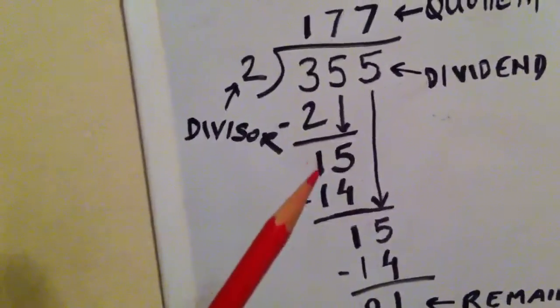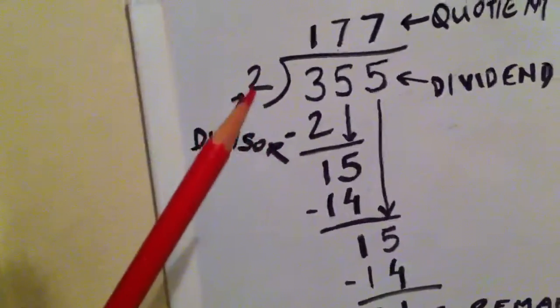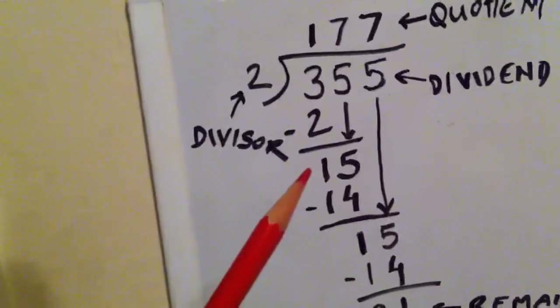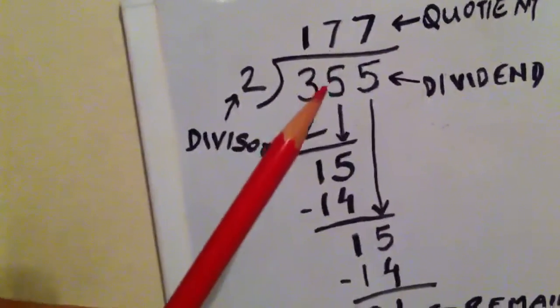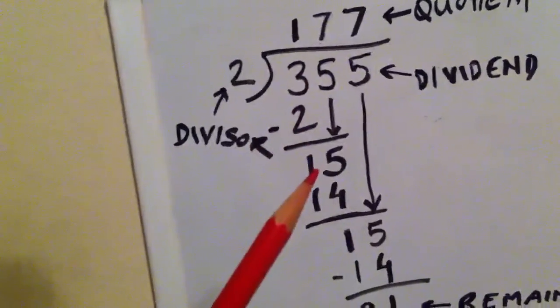So again we try to deal with 1 here and we say the 2 times table, do we get 1? No we don't. So in this case, what we do is we bring the next digit down and place it next to 1, so here we get 15.